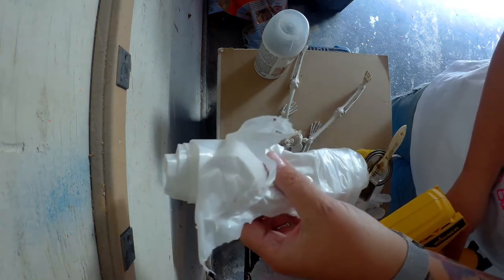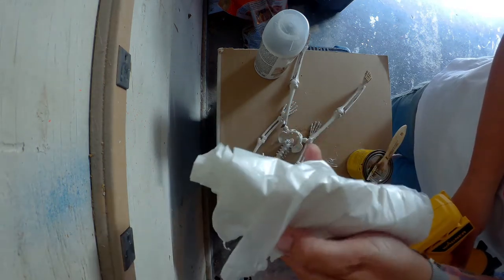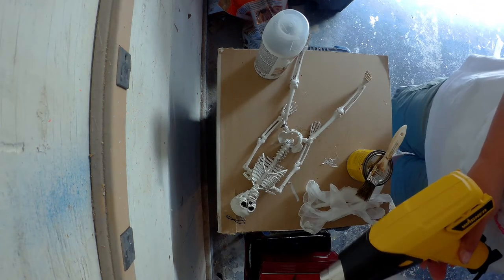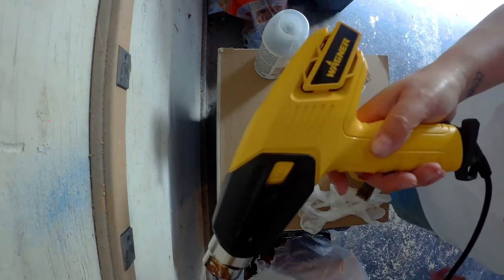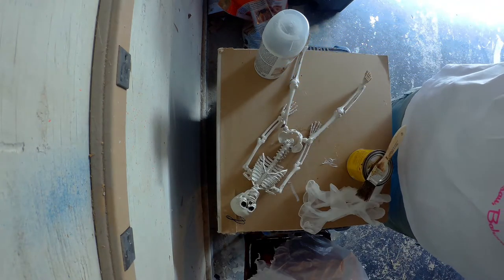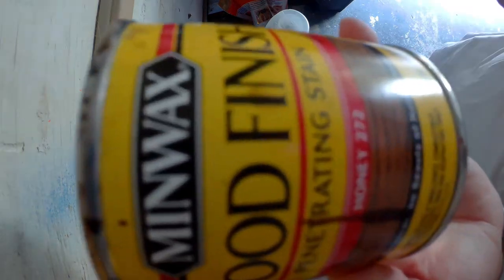You also need a 0.7 mil plastic tarp - you'd find it in the paint section at Home Depot or Walmart for like 99 cents. You need a heat gun; this one has two settings. I got it at Home Depot for about 20 bucks.